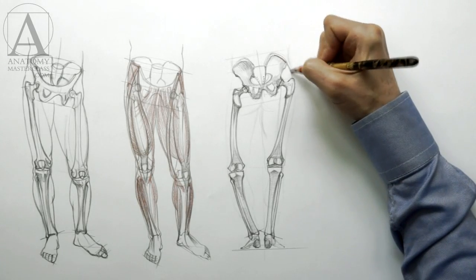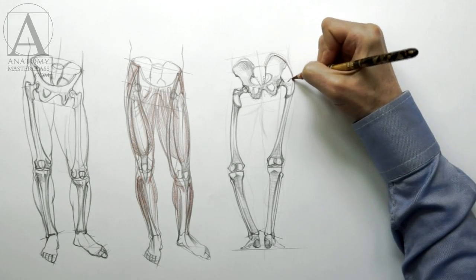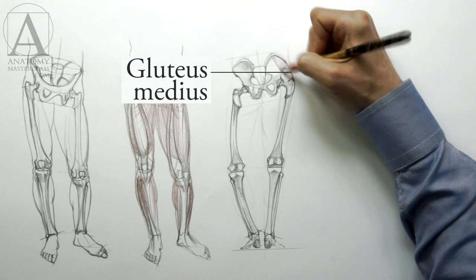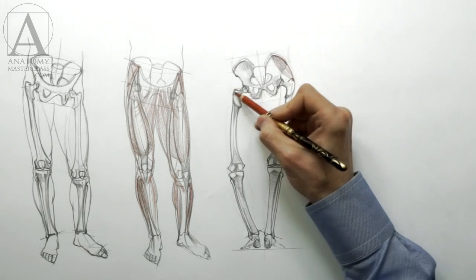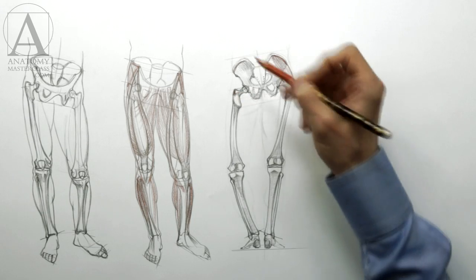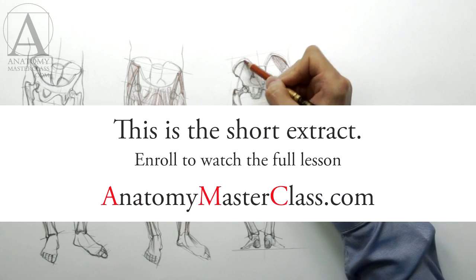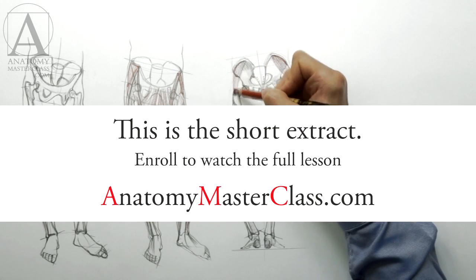I will draw the muscles with red pencil. The gluteus medius muscle originates from the outer surface of the ilium bone of the pelvis and inserts into the top projection of the thigh bone. This muscle helps move the upper leg away from the body and sideways.